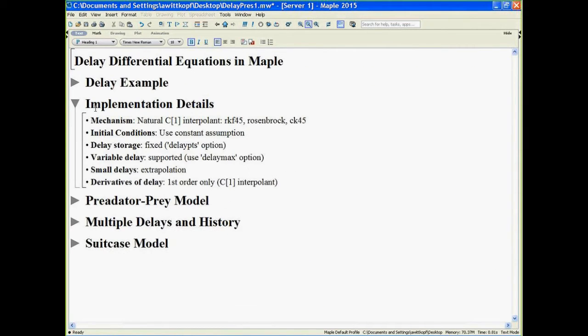So now that we've got a basic example out of the way, we'll look at some implementation details. The three general-purpose solvers have a built-in C1 interpolant, the three solvers being RKF45, Rosenbrock, and CK45. This interpolant makes it straightforward to compute the values of the prior time step, as long as sufficient history is maintained.